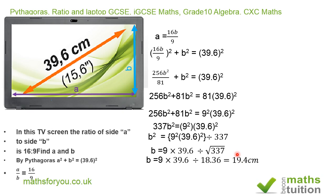Hope I'm making sense so far. Now if we substitute this value of b as 19.4 centimeters, that gives us that a = 16 × 19.4/9.